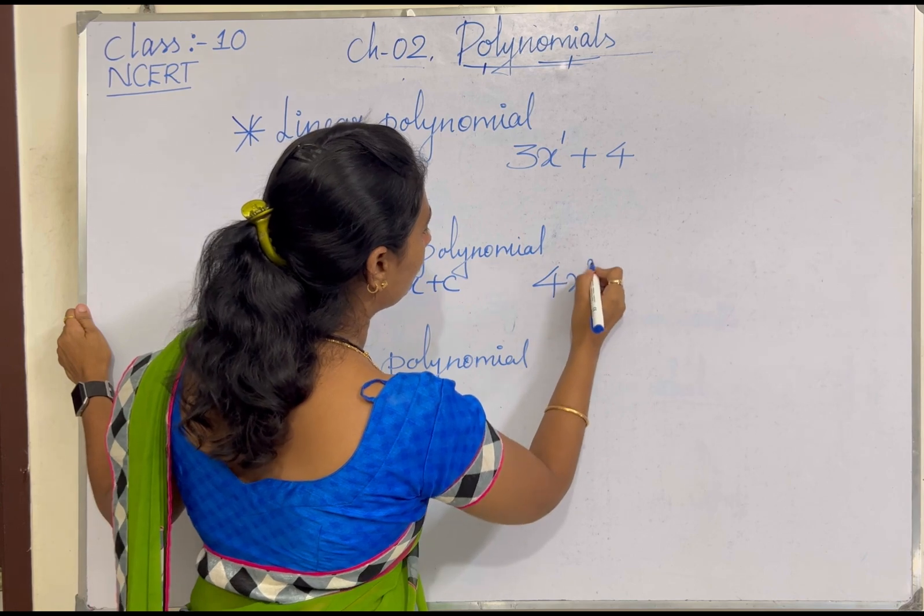The last type is the cubic polynomial. The general form of a cubic polynomial is ax³ + bx² + cx + d. For example, 5x³ - 4x² + 3x + 12. Here the highest power of the variable is 3. If any polynomial expression has degree 3, it comes under cubic polynomial.